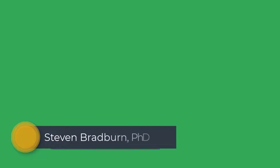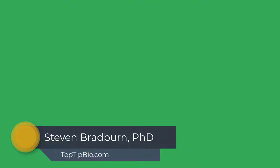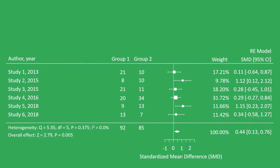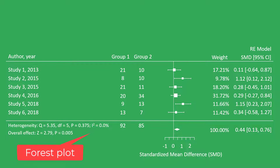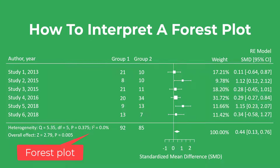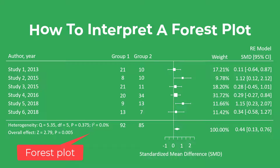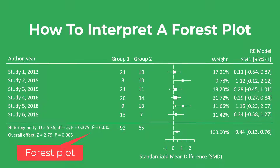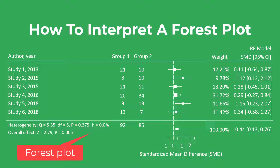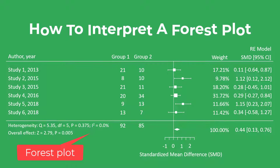When looking at results from meta-analyses or performing a meta-analysis yourself, you will often see plots that look similar to this. This is known as a forest plot, and in this video I will explain what a forest plot is and describe the different components of the plot by using an example so that it is easier to understand.